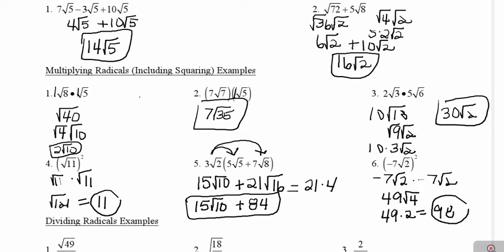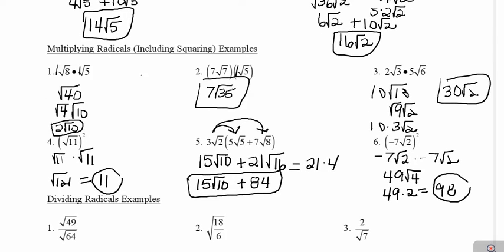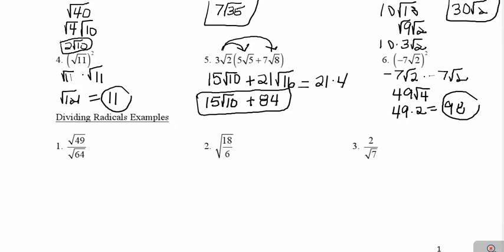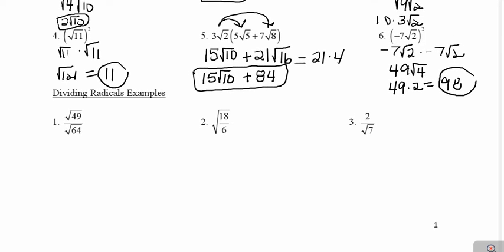The last type of square root simplification we're going to talk about is dividing radicals. There's one thing you need to keep in mind: you are not ever allowed to have a square root in the denominator of a fraction. It is not considered simplified if there's a square root in the denominator. So I always look to see if I can simplify anything first, and then if I can't, there's one other step that you need to do.